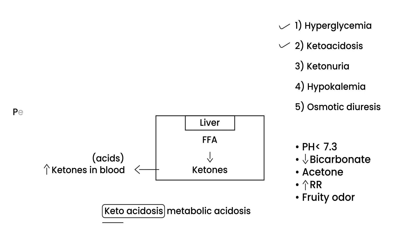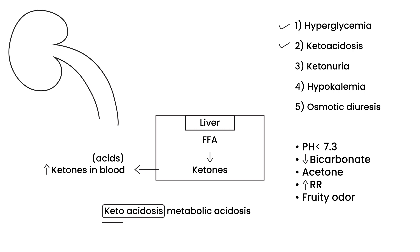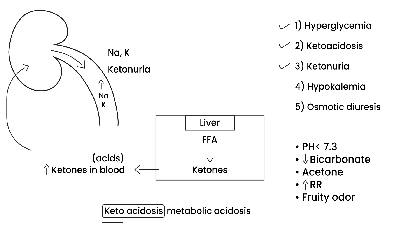The excess ketones then go to the kidney, which removes them in the urine — that's known as ketonuria, ketones in the urine. When ketones are removed in the urine, unfortunately electrolytes go with them. The electrolytes we're talking about are sodium and potassium. When you kick out excess amounts of potassium, you get hypokalemia.